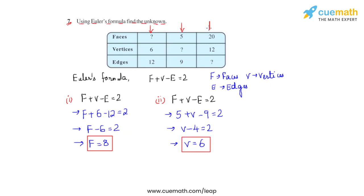Let us now consider the last column where we see that the number of faces and the number of vertices are given, and the number of edges is the unknown. Again taking Euler's formula f plus v minus e is equal to 2, we will substitute the values given in the column.